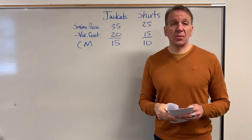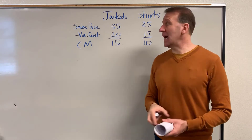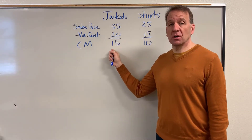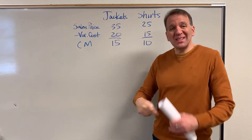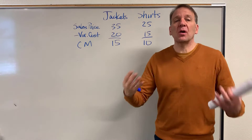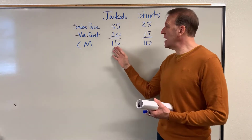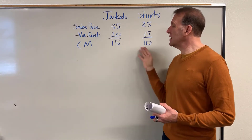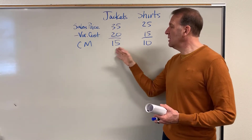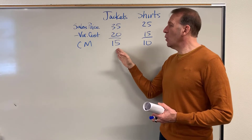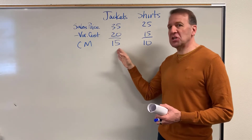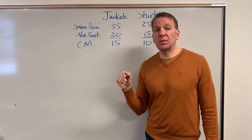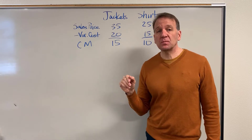Normally we want to sell the product that has the highest contribution margin. If there are no constraints, there are no problems — if we can sell as many of either of these as we want, then we want to sell the jackets first because they have the higher contribution margin.